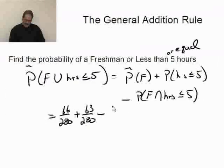So this is minus 24 out of 280. You can do the arithmetic on this and actually get an answer.